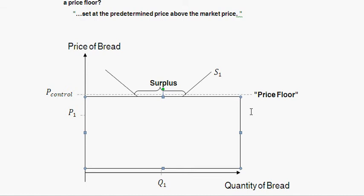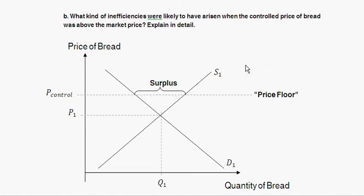Moving to Part B: what kinds of inefficiencies were likely to arise when the controlled price of bread was above the market price? You can take the answer from the textbook — Krugman Wells has a section titled 'How a Price Floor Causes Inefficiency,' which lists all the inefficiencies that occur with a price floor.